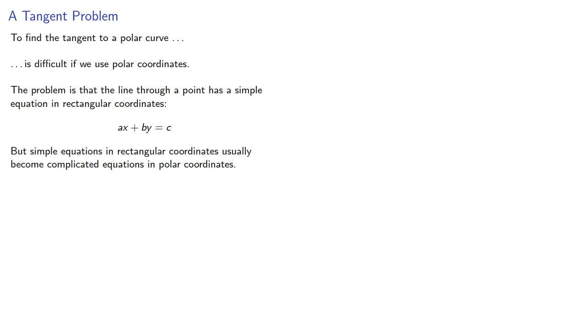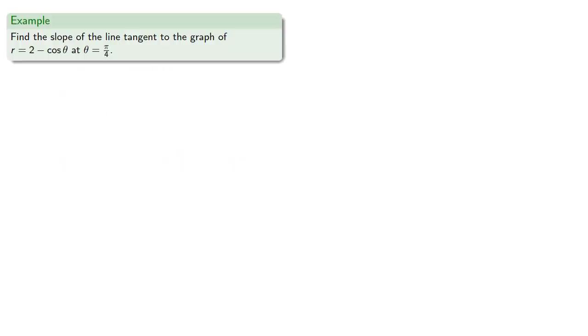However, a problem exists whether or not we can solve it easily, so let's consider the problem of finding the tangent to a curve defined in polar coordinates. Let's try to find the slope of the line tangent to the graph of r equals 2 minus cosine theta at theta equals pi fourths.